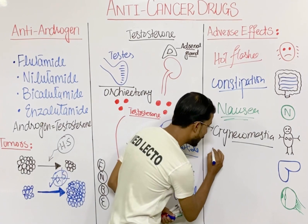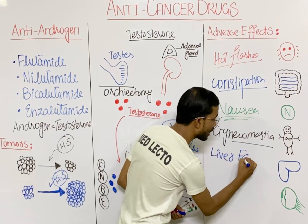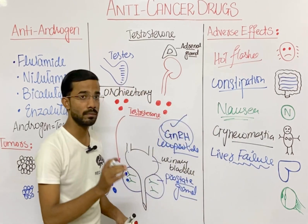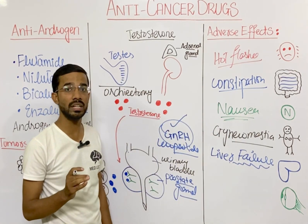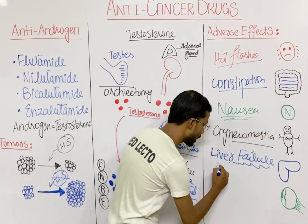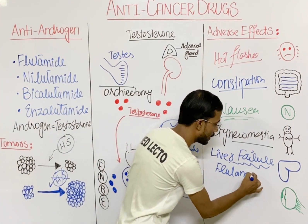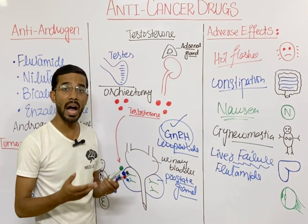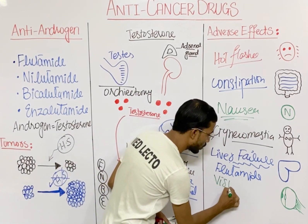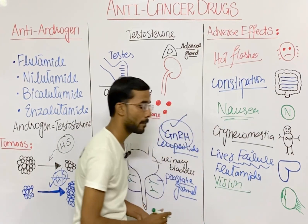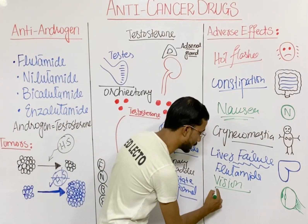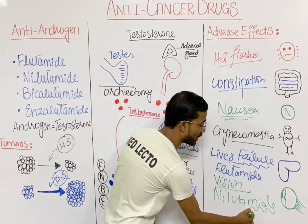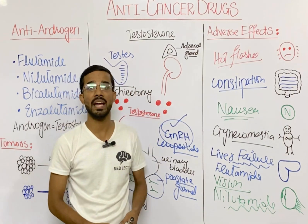You can also see liver failure as an adverse effect, which is most importantly associated with flutamide. Additionally, eye damage or vision problems can be seen with nilutamide. These are the different adverse effects of the anti-androgen drugs.